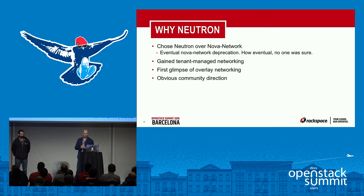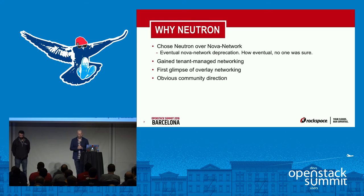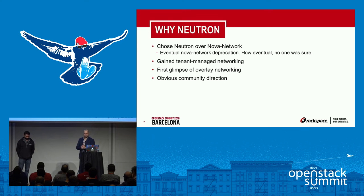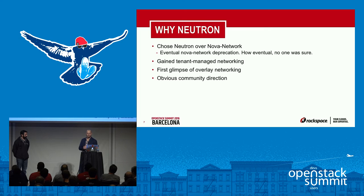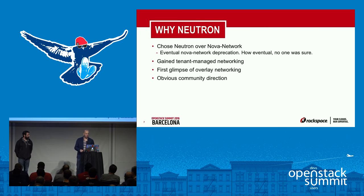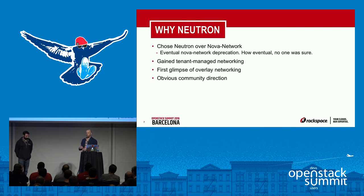Going back a bit: in Nova Network, Linux bridges provided connectivity to instances. When we adopted Quantum and then Neutron, there was a community-driven idea to use Open vSwitch rather than Linux bridges. Community documentation really helped drive adoption — all the documentation guided folks toward Open vSwitch, which is the direction we went. One appealing feature of Neutron at the time was tenant-managed networking, leveraging overlay networking technologies, primarily GRE and later VXLan, and the community was moving in the direction of Neutron.